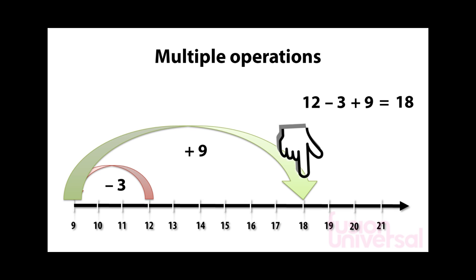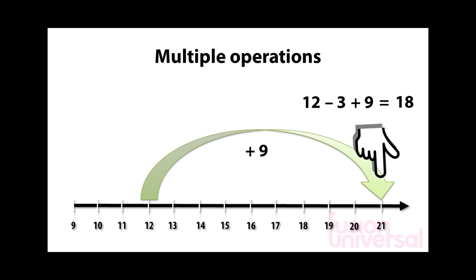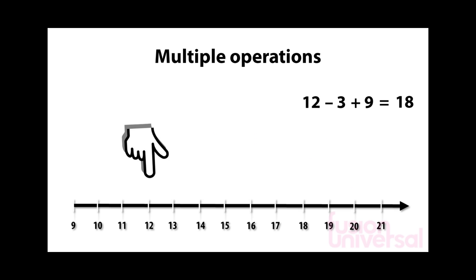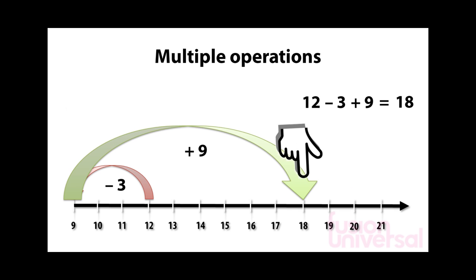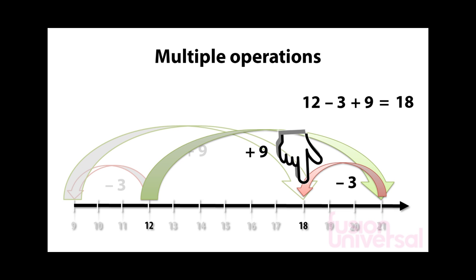You may have noticed that the overall effect is to move 6 to the right. Could this be done in a different order? If we start at 12 again, but move 9 to the right before moving 3 to the left, we once again finish at 18. This calculation could then be done in either order: 12 subtract 3 plus 9 is equal to 18, or 12 plus 9 subtract 3 is equal to 18.